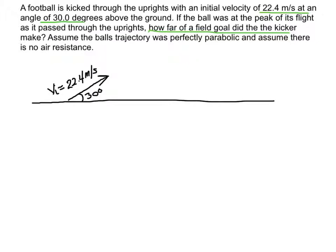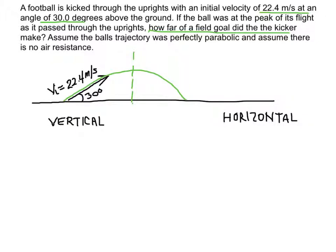I am going to draw a little sketch to show what that looks like. Here is the vector — it is 22.4 meters per second at 30 degrees above the horizontal. This ball is going to take on a parabolic trajectory, and right here at the peak of its flight is where the uprights are going to be. This is a projectile motion problem, which means we are going to have a vertical component and a horizontal component to the velocity.